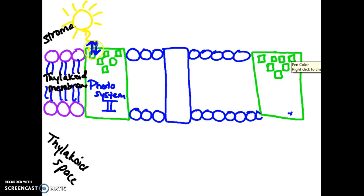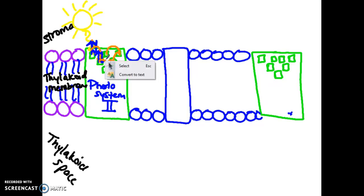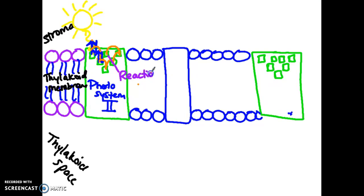So what happened to that energy? The energy — the difference between the excited level and ground state — is passed on. The electron itself doesn't get passed, but the energy gets passed from one chlorophyll to the next. An electron will get excited, drop back to ground state, and the energy will pass from chlorophyll to chlorophyll until it reaches the final chlorophyll, which is given a specific name — the reaction center — because something different happens there.